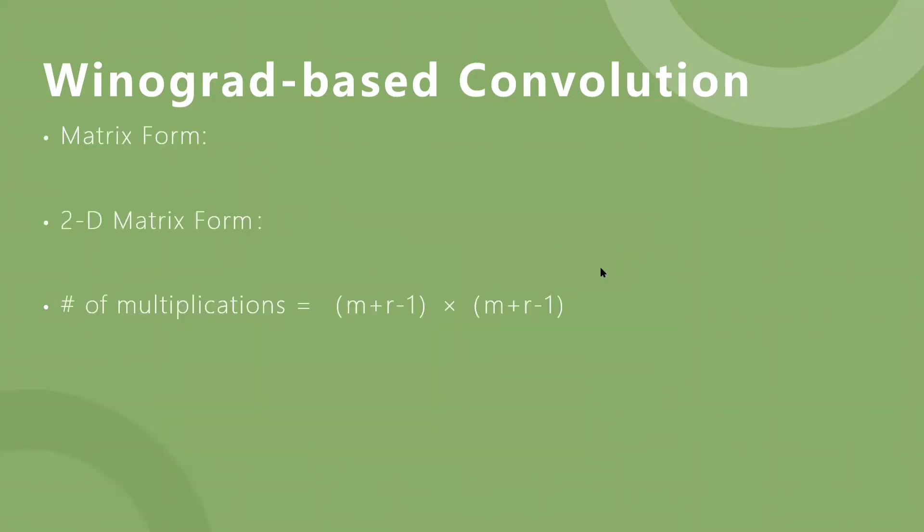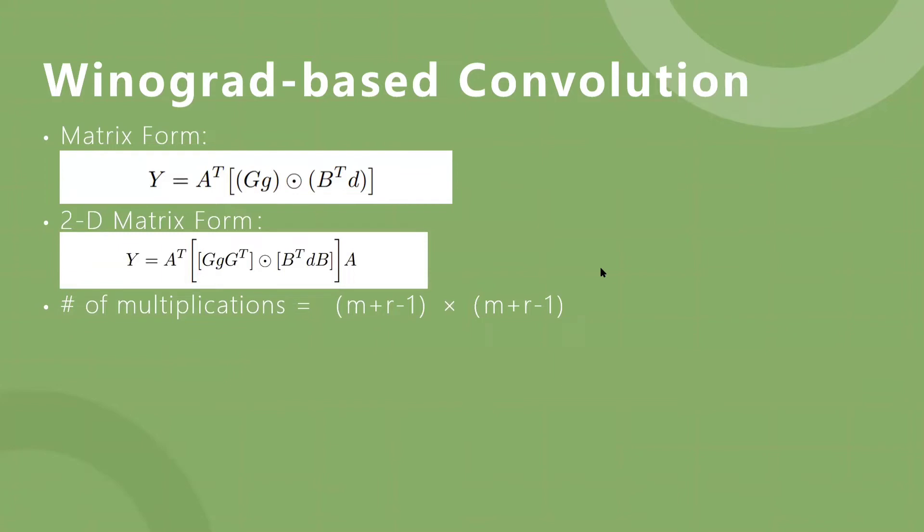Winograd fast filtering algorithms can be written in matrix form as this. A minimal 1D algorithm, F(M,R), is nested with itself to obtain a minimal two-dimensional algorithm, F(M×M, R×R), like this. Now, algorithms for F(M×M, R×R) can be used to compute convolutional layers with R by R kernels. Each image channel is divided into tiles of size M plus R minus 1 times M plus R minus 1, with R minus 1 elements of overlap between neighboring tiles, yielding P tiles per channel.